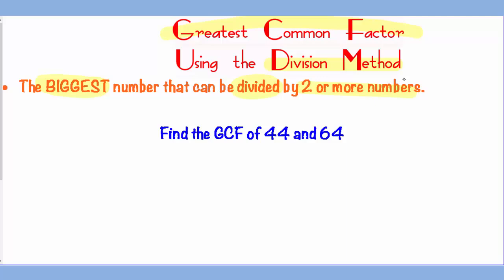So in the example below we will look for the GCF of 44 and 64. The first thing you should do is write the two numbers side by side and then try to look for a common factor that can go into both numbers. In this case 2 goes into both 44 and 64 bringing them down to 22 and 32.